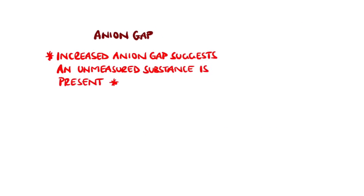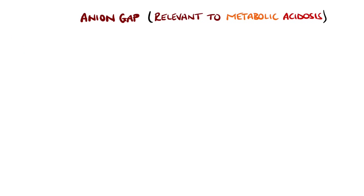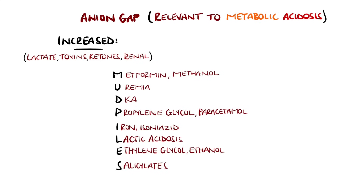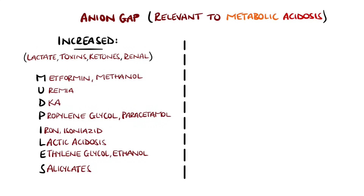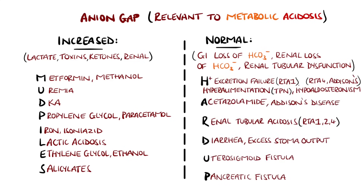For example, in diabetic ketoacidosis, the unmeasured substance not on the ABG are the ketoacids. Generally, the causes can be divided into lactate, toxins, ketones, or renal, and the mnemonic MUDPILES can be used to remember some of the more specific causes. Causes of normal anion gap metabolic acidosis are generally gastrointestinal or renal losses of bicarbonate and renal tubular changes. Specific causes can be remembered with the mnemonic HARDUP.